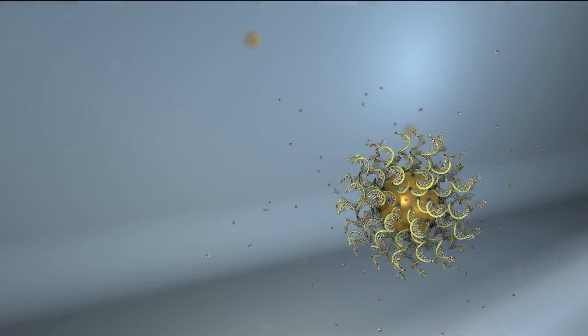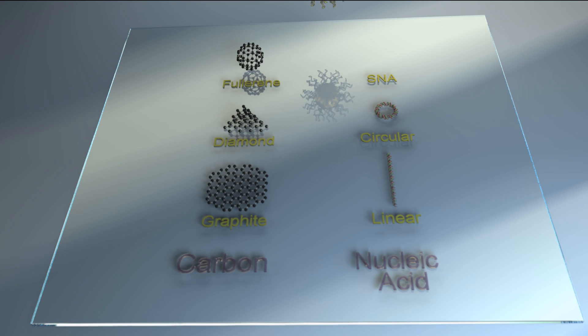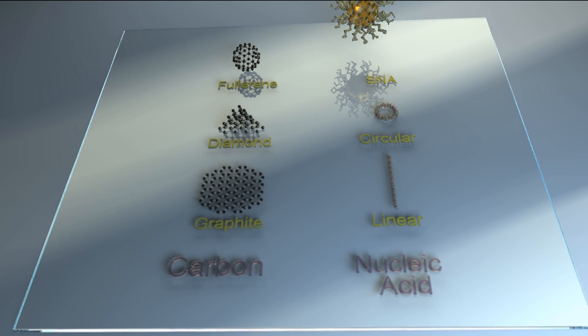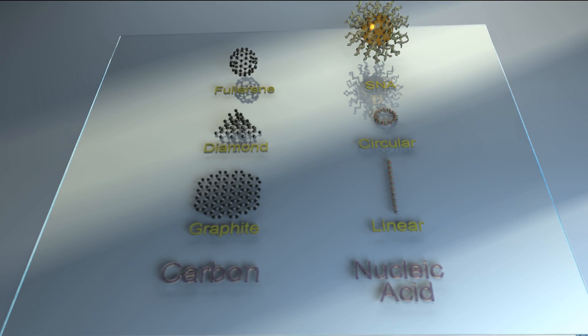In the same way that fullerenes are a unique form of carbon, SNAs are a third important form of nucleic acids, defined and differentiated in terms of structure and function.